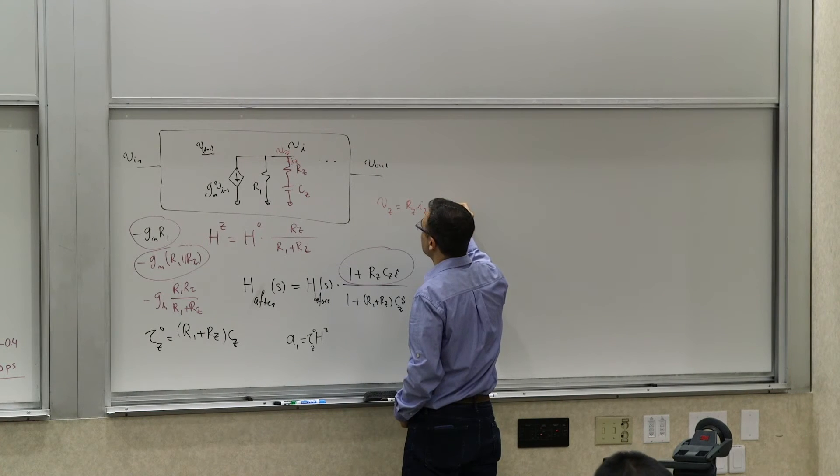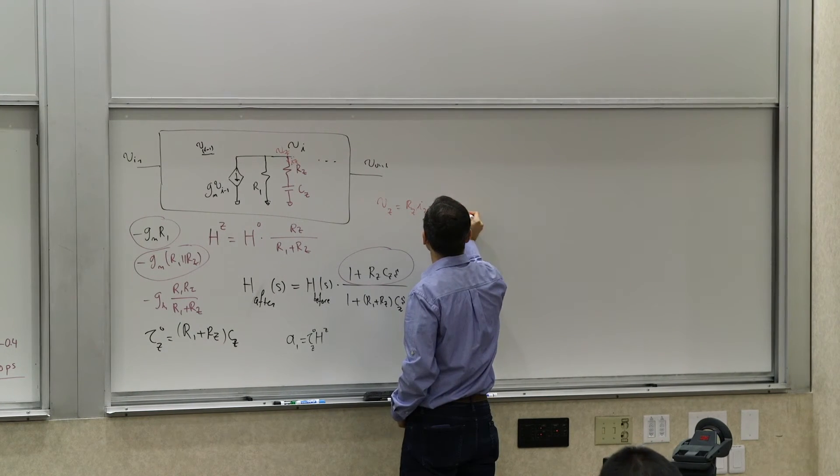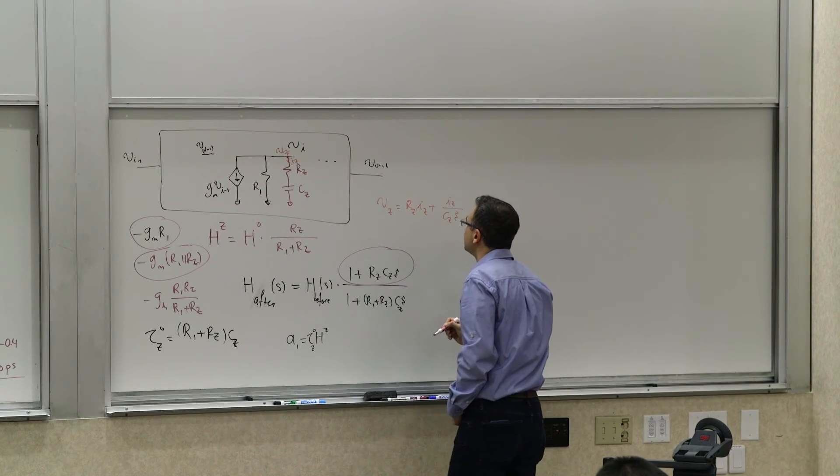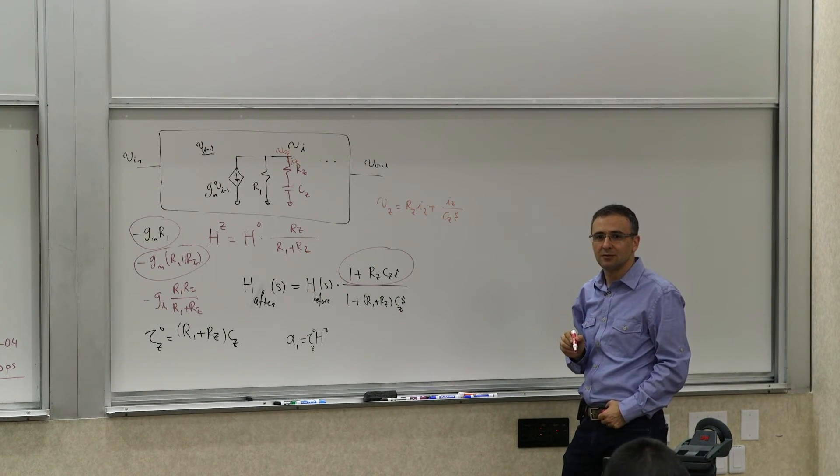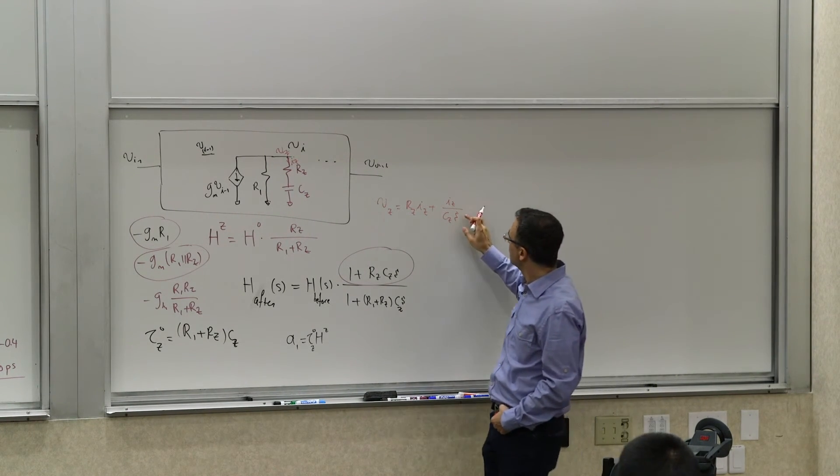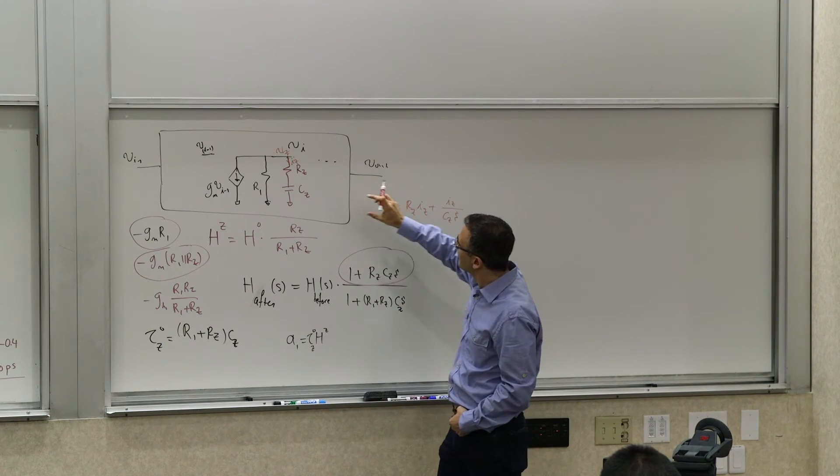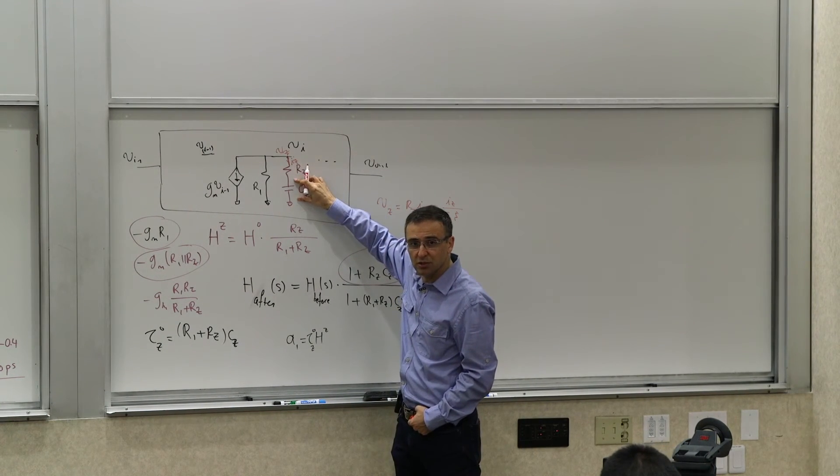Vz can be written as Rz*Iz, plus the impedance here, which is basically Iz divided by Cz*s, right?